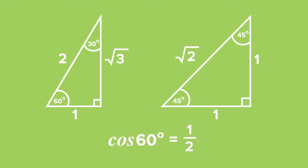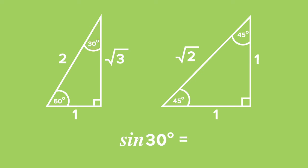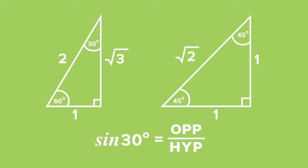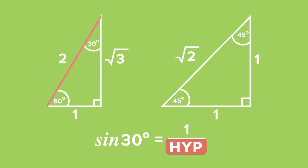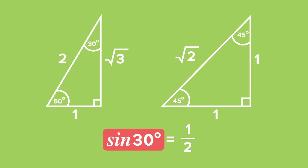In the same way, we can work out the value of sine of 30 degrees, which is equal to opposite over hypotenuse. The opposite side has a value of 1, and the hypotenuse has a value of 2. Therefore, sine of 30 degrees is equal to a half.